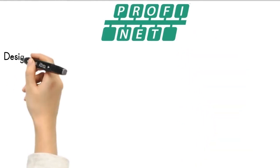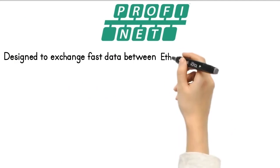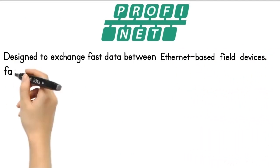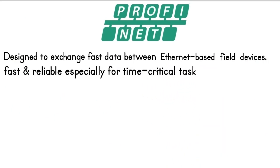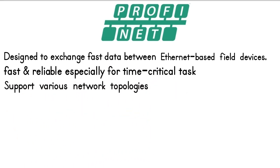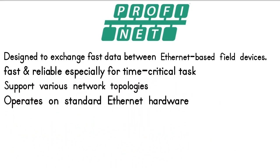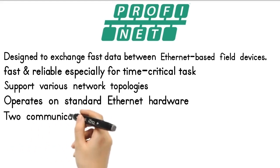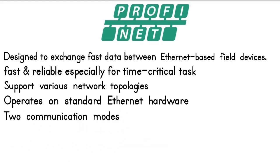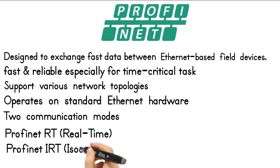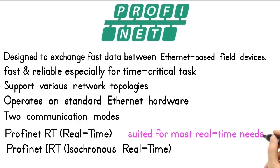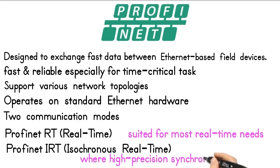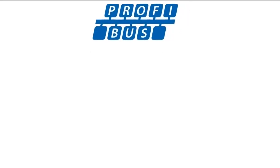PROFINET Protocol. PROFINET is designed to exchange fast data between Ethernet-based field devices. It is designed to be fast and reliable, especially for time-critical tasks. It can support various network topologies and operates on standard Ethernet hardware, such as CAT-5 or CAT-6 cables. There are two communication modes: PROFINET RT, real-time, and PROFINET IRT, isochronous real-time. PROFINET RT is suited for most real-time needs, while PROFINET IRT is targeted for applications that demand high-precision signal.